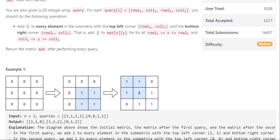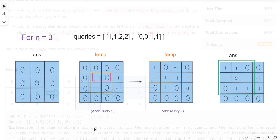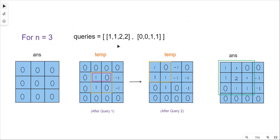We have to approach this a little differently and come up with a more efficient approach. We can use the concept of prefix sum to solve this problem. Moving to the whiteboard with n equal to 3 and the queries array, we will take two matrices: one is the answer matrix and the other is a temp matrix. The answer matrix will be the final matrix we return, and the temp matrix is the prefix matrix. The answer matrix has size n, while the prefix matrix has size n plus one.